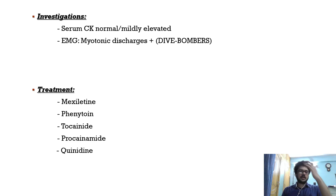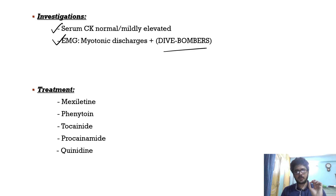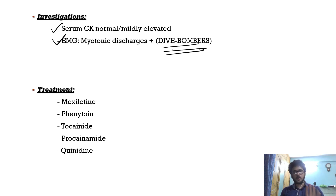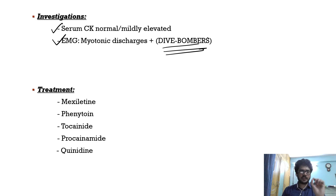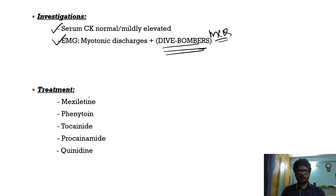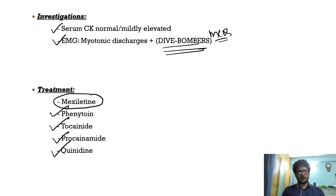For investigations: serum creatine kinase is normal or mildly elevated. Very important MCQ: EMG shows myotonic discharges which sound like dive bombers. Whenever you think of dive bomber sounds on EMG, think myotonia. Treatment of choice is mexiletine. Other drugs that can be used include phenytoin, tocainide, procainamide, and quinidine. That covers the important channelopathies.